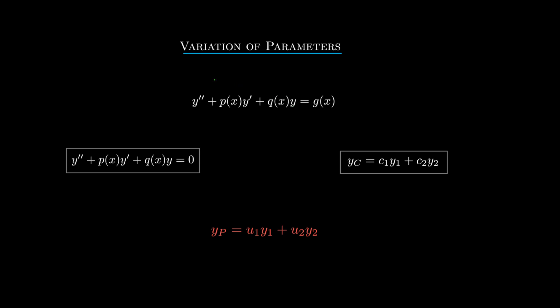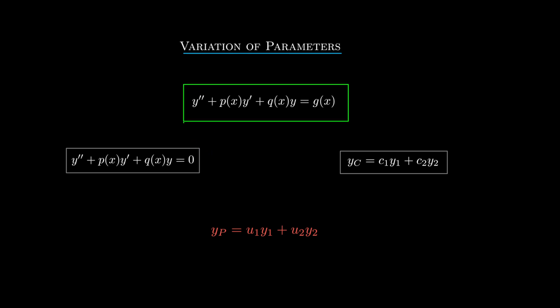We begin with a second-order linear differential equation, and from it we can consider the associated homogeneous equation. The solution to that gives us the complementary function, which is really just any general linear combination of any two linearly independent solutions, y1 and y2, of the homogeneous equation.